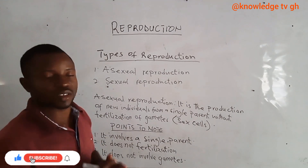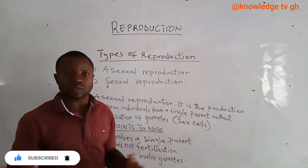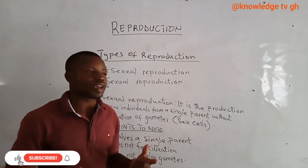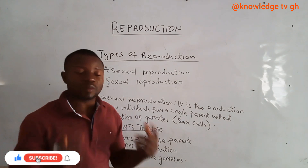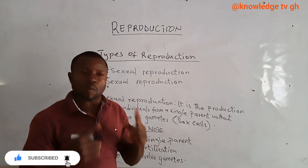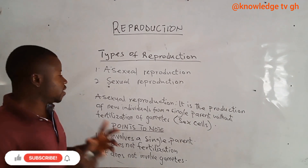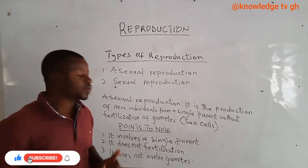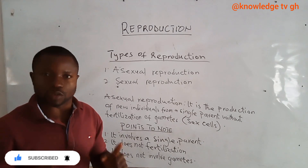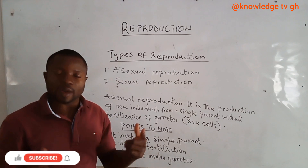Today we will focus on asexual reproduction. Asexual reproduction is the production of new individuals from a single parent without fertilization of gametes. The gamete here is the sex cell — the sex cell from the male and the egg from the female. Points to note: one, it involves a single parent; two, it does not involve fertilization; three, it does not involve gametes.